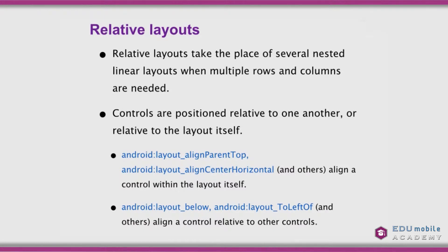The second type of layout is a relative layout, and these become more important as we go further with Android development. Relative layouts take the place of nested linear layouts when we need multiple rows and columns. In a relative layout, controls are positioned relative to one another — hence the name — or relative to the layout itself. We have attributes like android:layout_alignParentTop, android:layout_centerHorizontal, layout_below, layout_above, layout_toLeftOf, and layout_toRightOf.